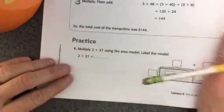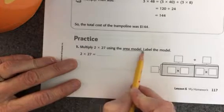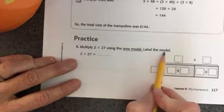All right, let's take a look at the next one here. We're going to multiply 2 times 27 using the area model, and it says to label the model.